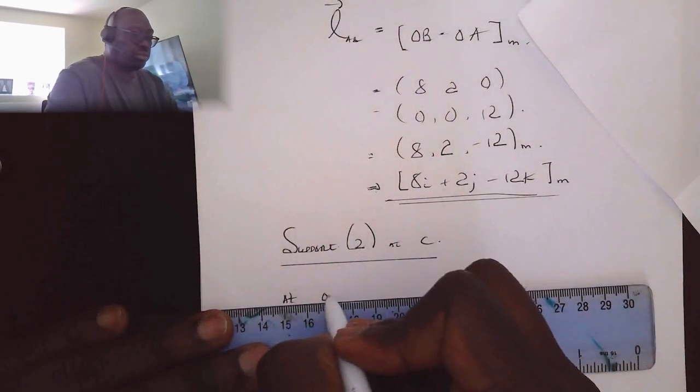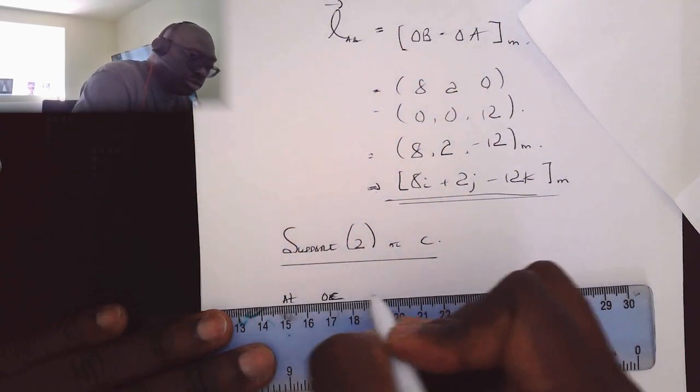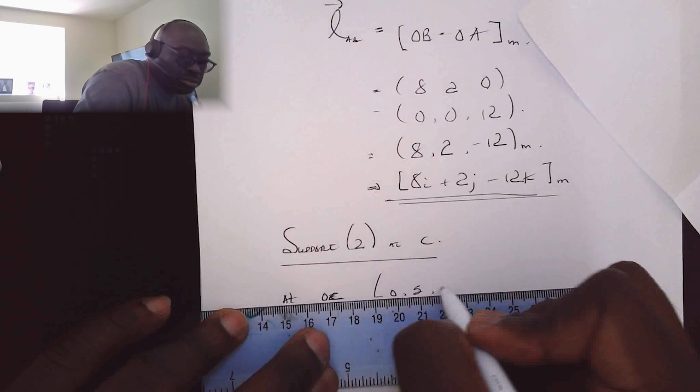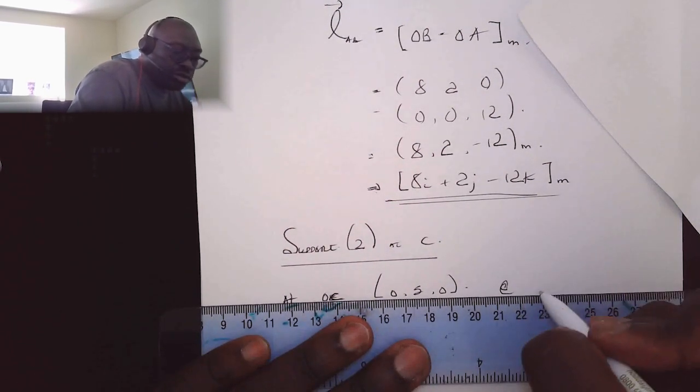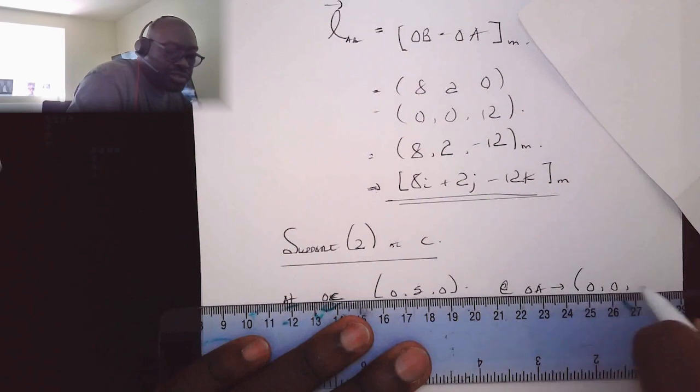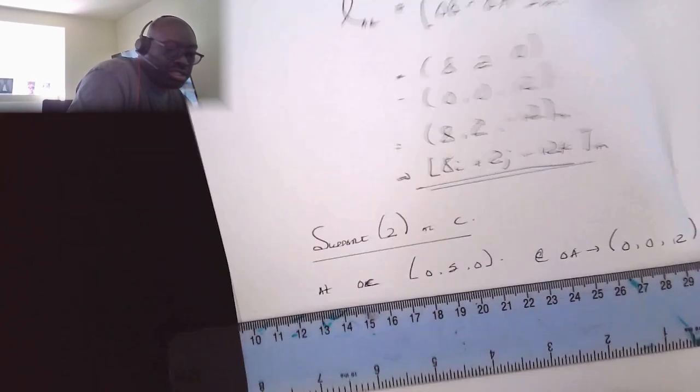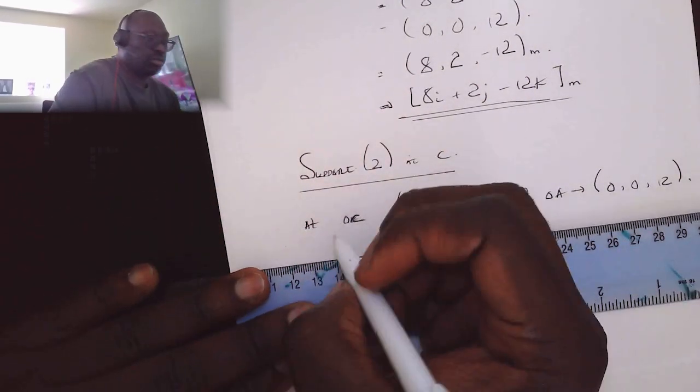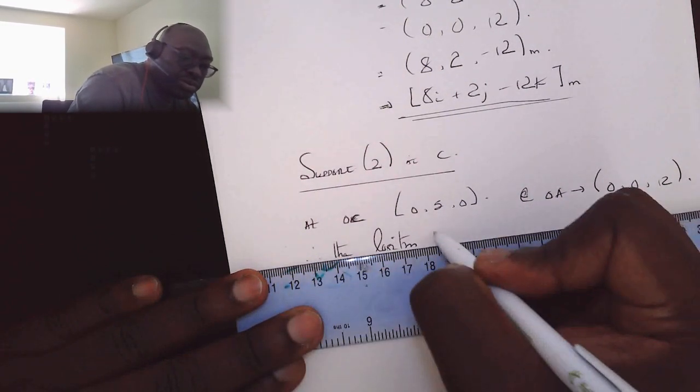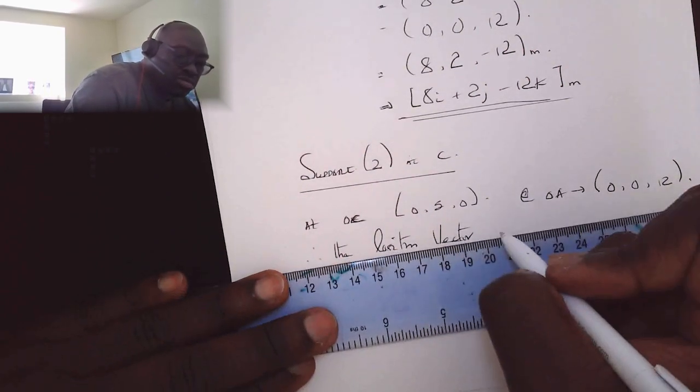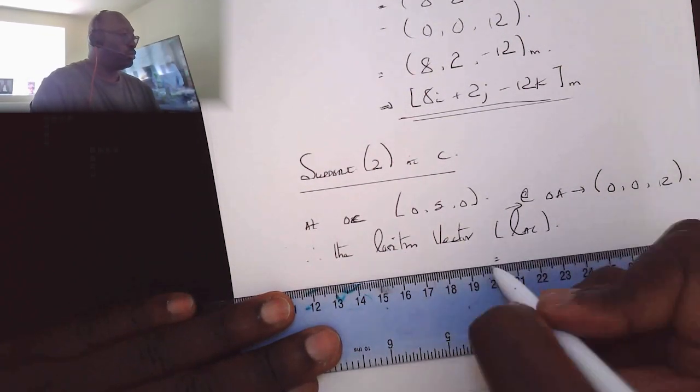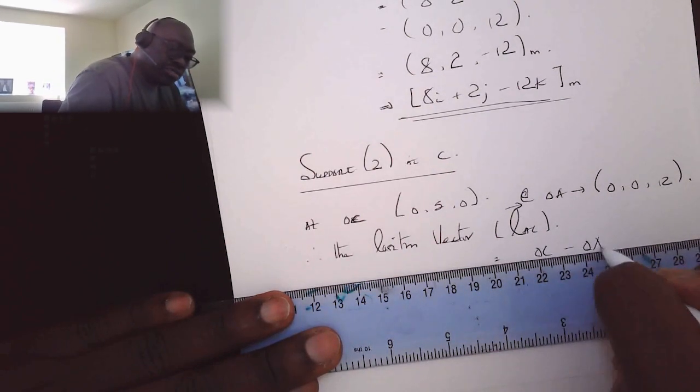So therefore, the position vector, and we're calling that rho AC, that's equal to OC minus OA. So we can do it this way. So what's the coordinate for C? So that is zero, five, naught, minus zero, zero, twelve.